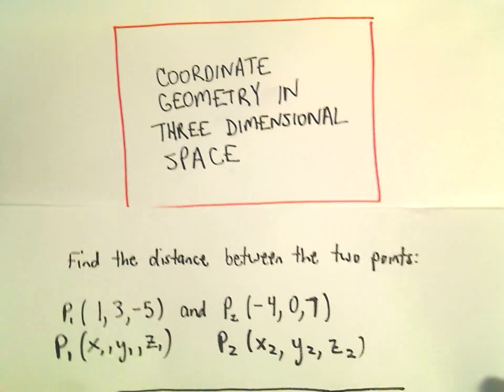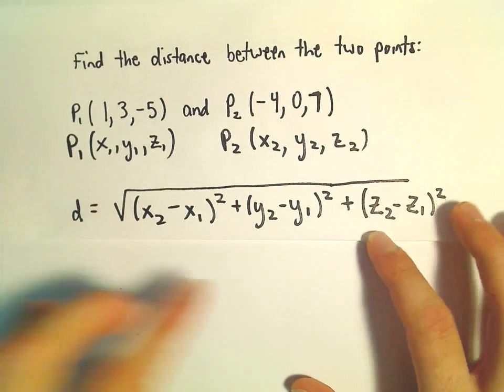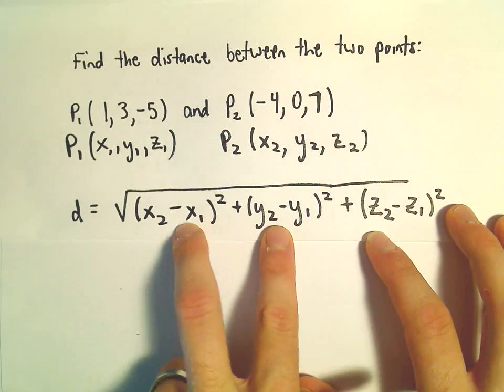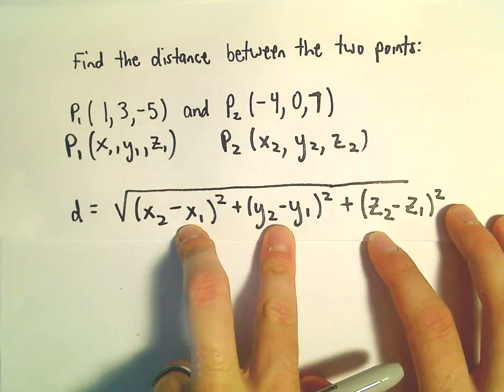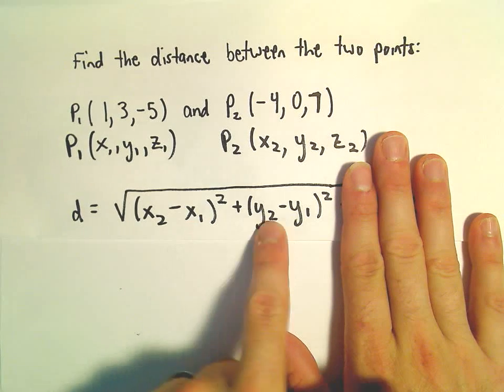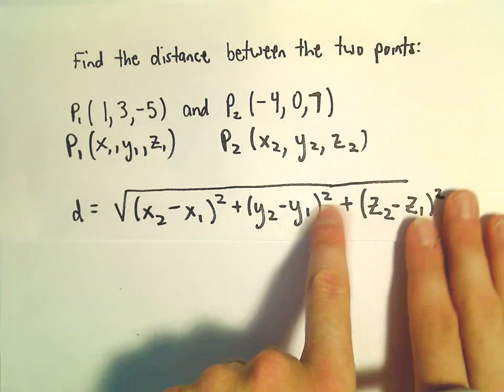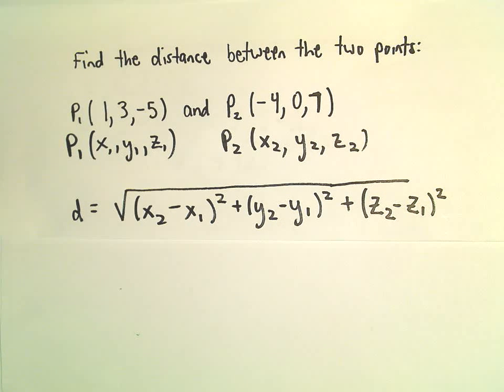the distance formula is going to be the formula at the bottom. Again, it's just what we normally do. Hopefully you've seen the distance formula in algebra. There you typically just deal with two dimensions, so you see the formula x2 minus x1 squared plus y2 minus y1 squared. But now we have to add on the z components as well.